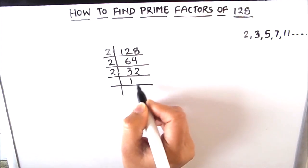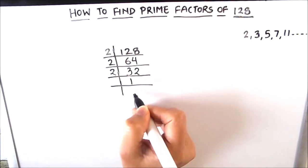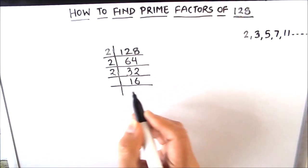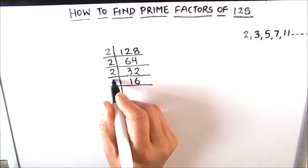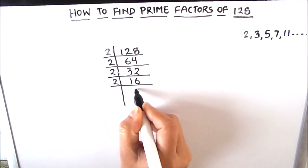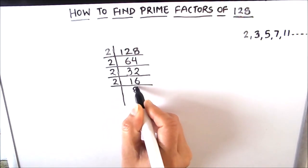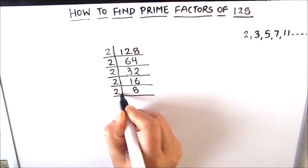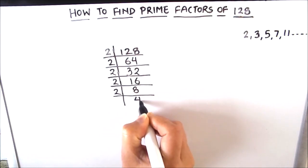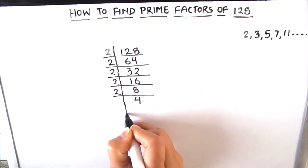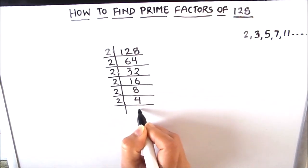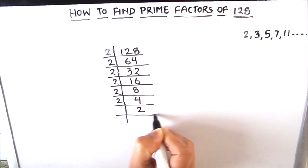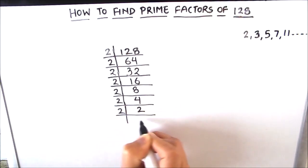Continuing to divide by 2: 2 times 8 is 16, 2 times 4 is 8, 2 times 2 is 4, and 2 times 1 is 2.